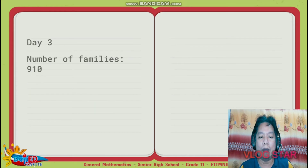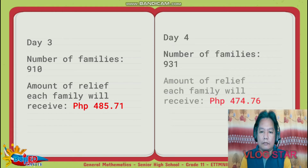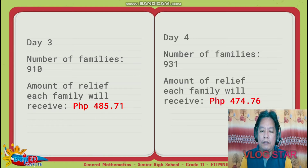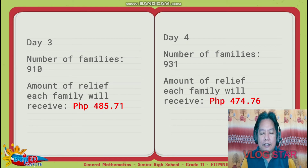For Day 3, the number of families surveyed is 910 and the amount of relief each family will receive is 485.71 pesos. For Day 4, the number of families is 931, and the amount each family receives is 474.76 pesos. So what can we observe? From Day 1 to Day 4, the number of families increases according to the survey, but the amount of relief each family receives is decreasing.